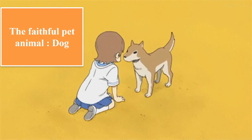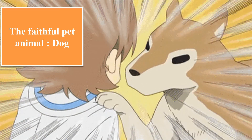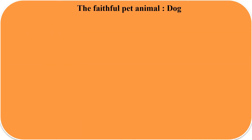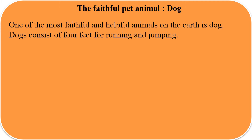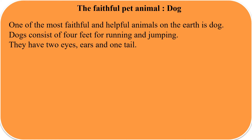Now our next topic is the faithful pet animal, dog. Dog is a pet animal and one of the most faithful and helpful animals on Earth. Dogs have strong legs for running. They have two eyes, ears, and a nose. The dog also has a tail as a notable body part.